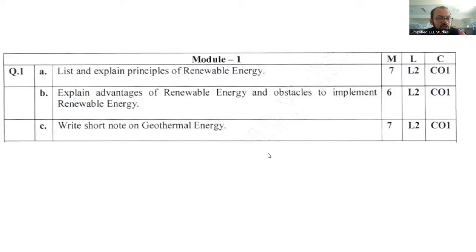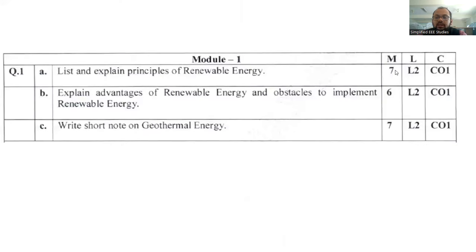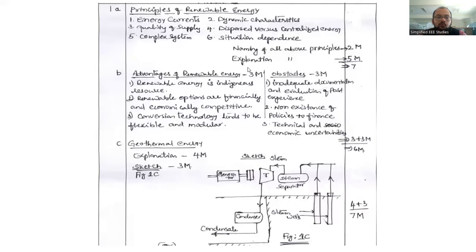First question is list and explain the Principles of Renewable Energy Sources. Here, you are supposed to mention about energy currents, dynamic characteristics, quantity and supply, dispersed versions of centralized energy, complex systems, situation dependence. The weightage is seven marks. You need to satisfy the points which I highlight here so that you will be getting full marks.